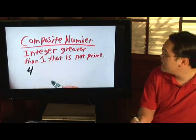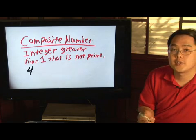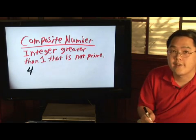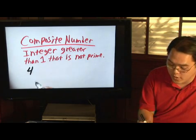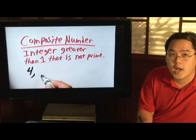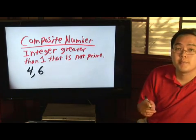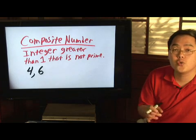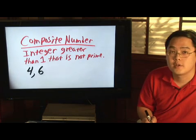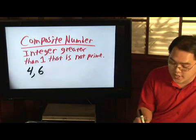But four is a composite number because two is a factor of four. Two will go into four. Five is prime, so it's not composite. But six is a composite number because besides one and six, two and three are also factors of six. Two and three will go into six.